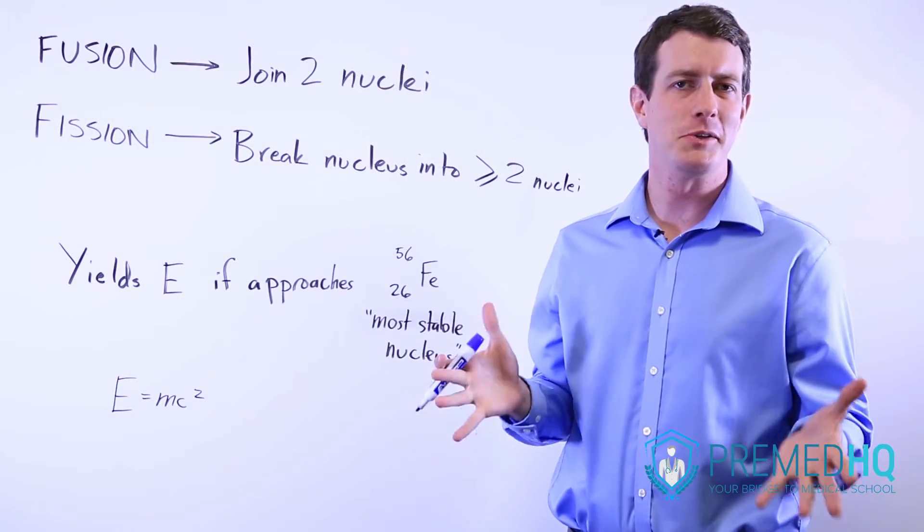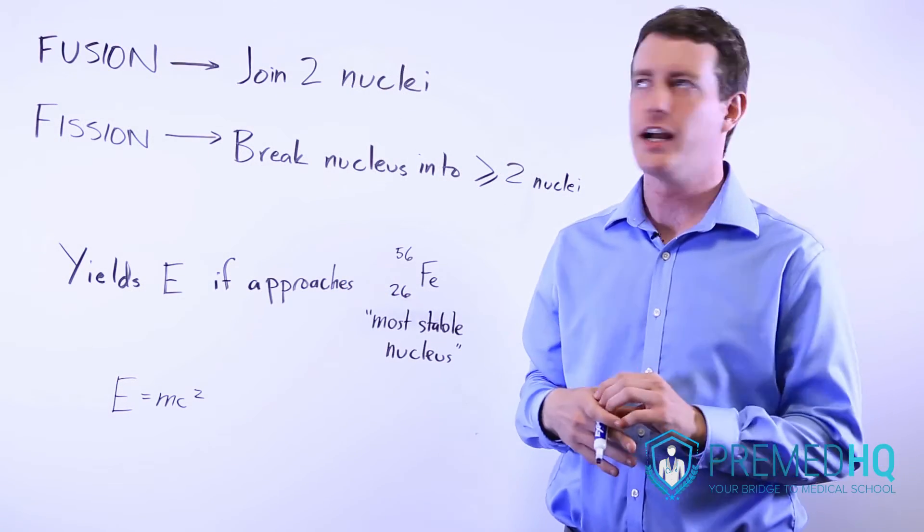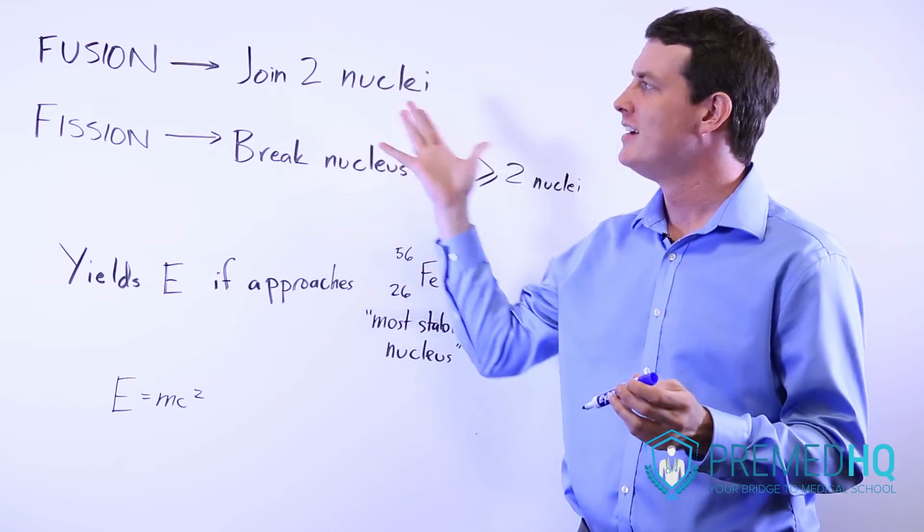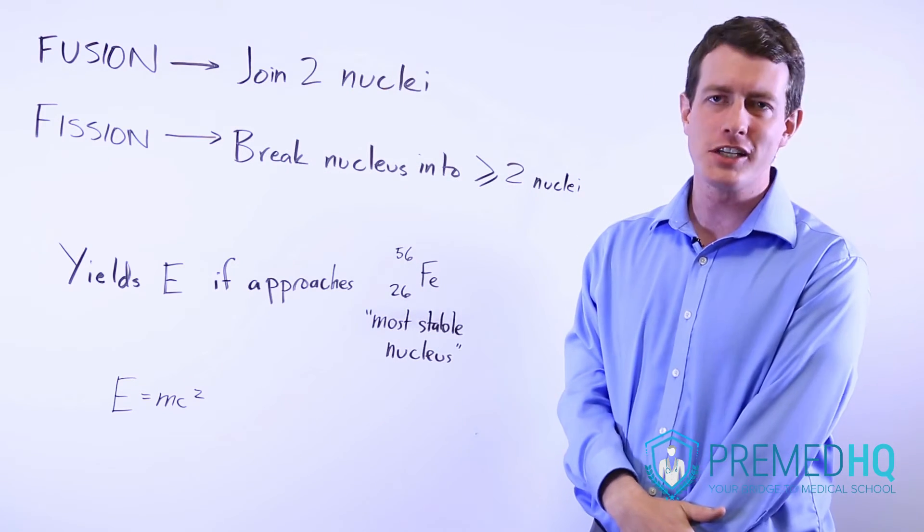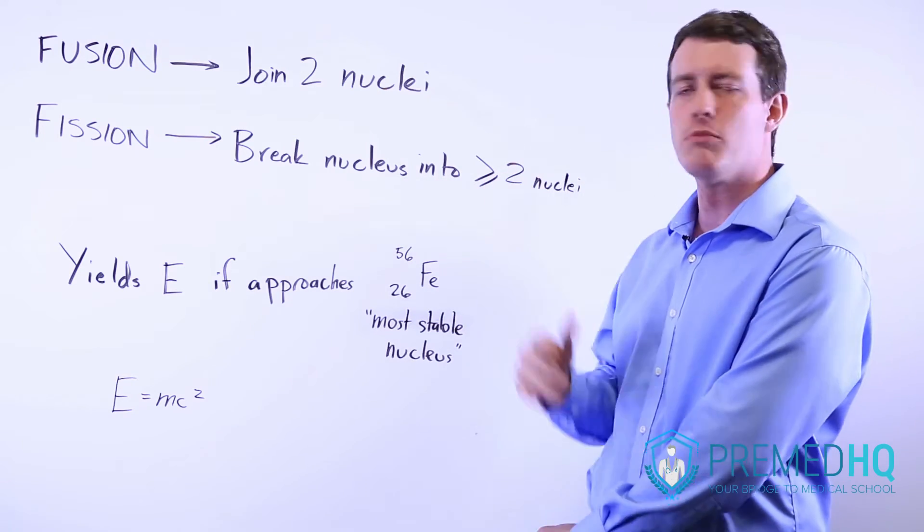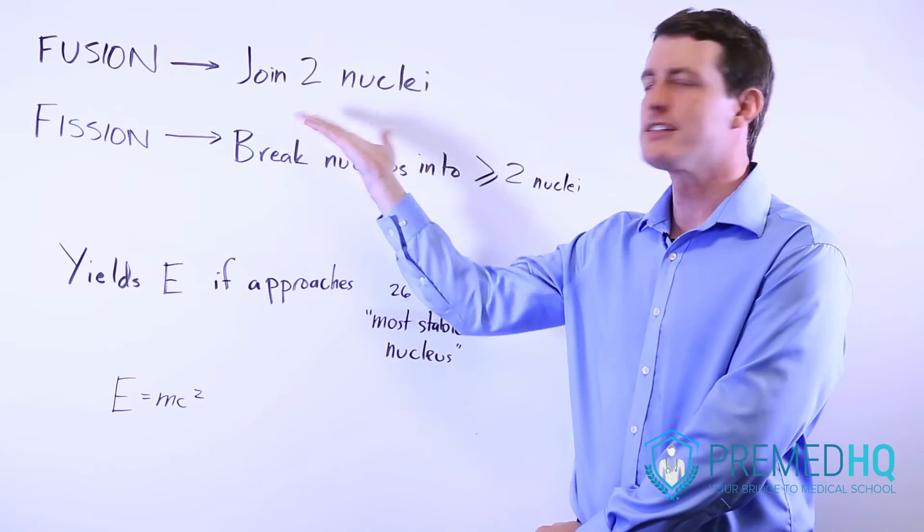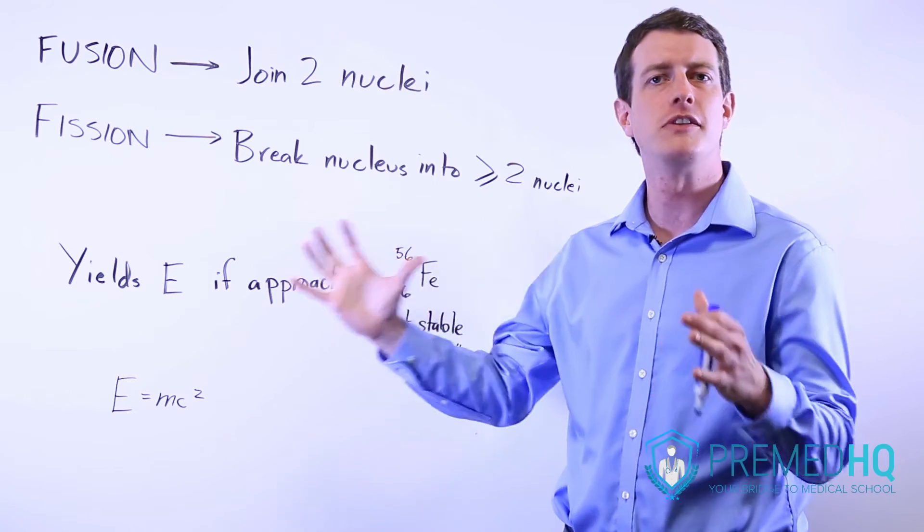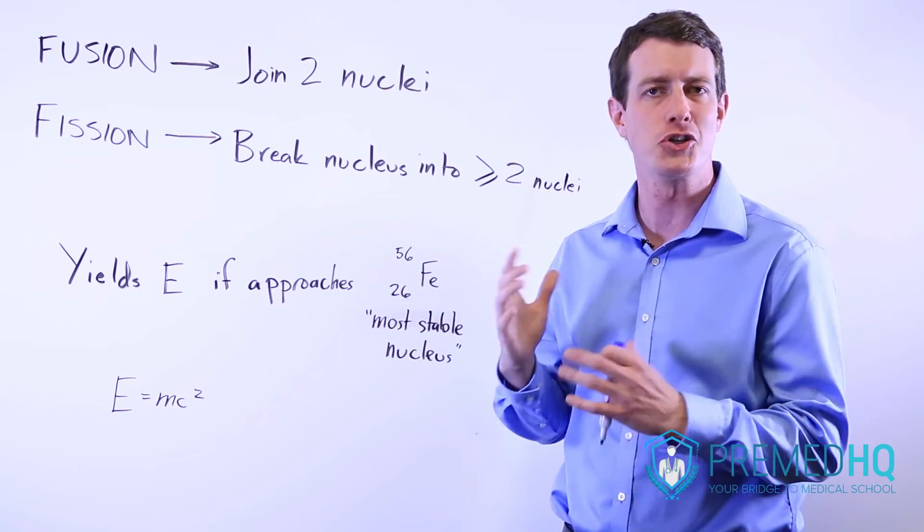The two terms that you encounter a lot when dealing with nuclear reactions are fusion and fission, and they're fairly straightforward. Fission is when you break a nucleus into two or more nuclei. Fusion is, as it sounds, it's the fusing of two nuclei into a larger nucleus.